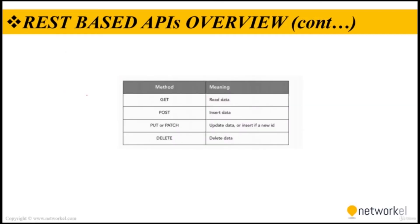Until now we have only been consuming data from APIs, but you can also write data to APIs. For this purpose it is good to know HTTP request methods, the most important being HTTP POST and HTTP GET. A GET request is used to retrieve resource representation and information only, and not to modify it. As GET requests do not change the state of the resource, they are said to be safe methods.